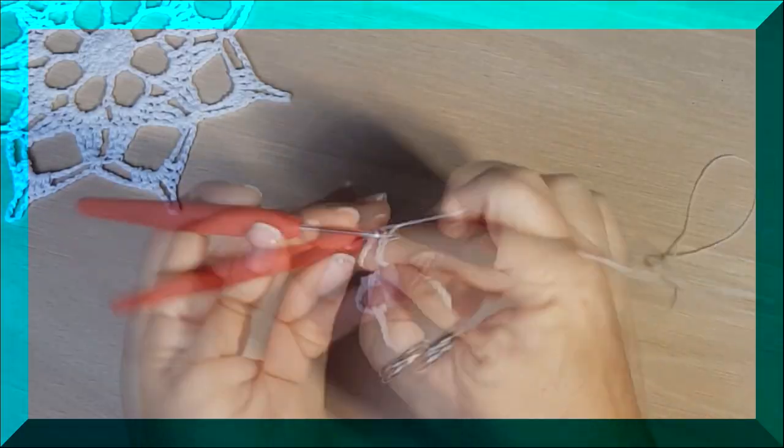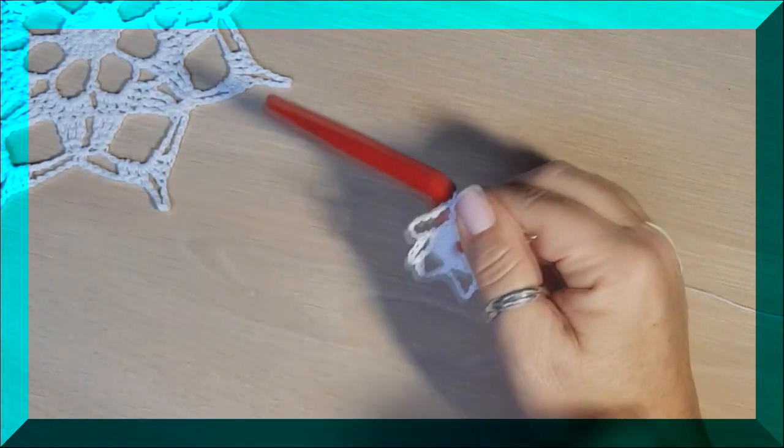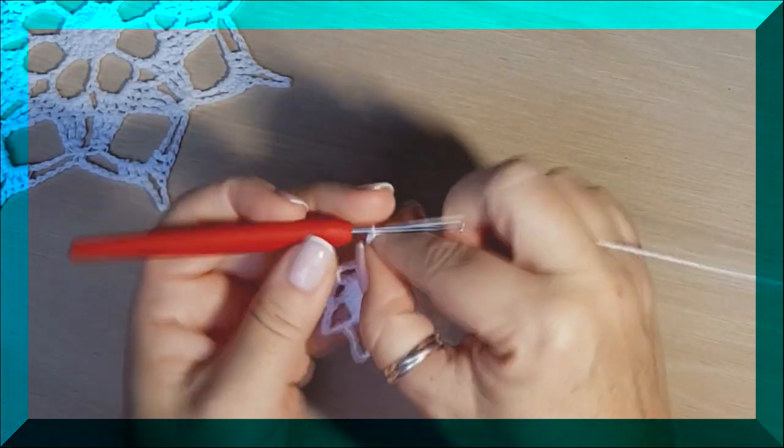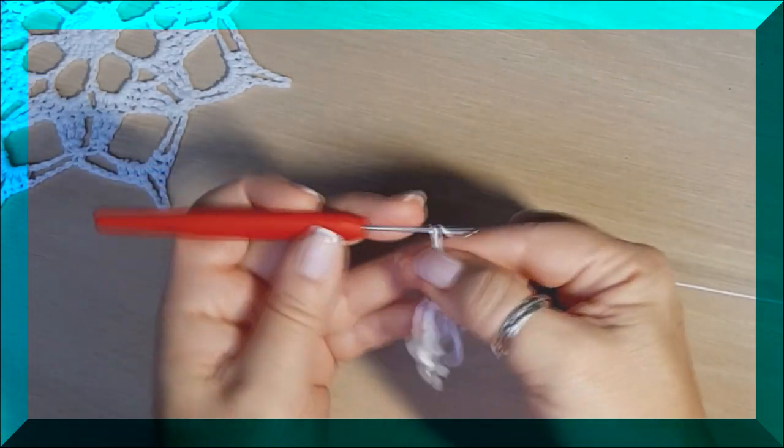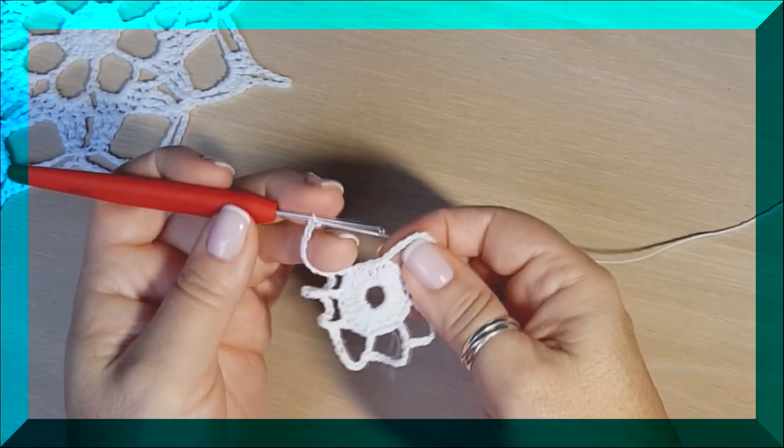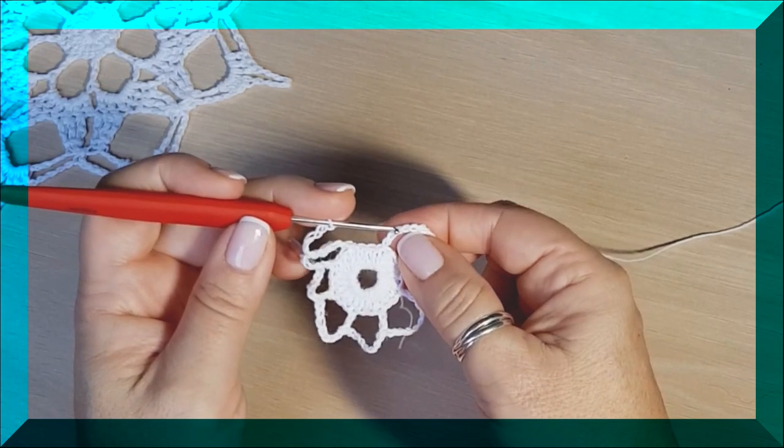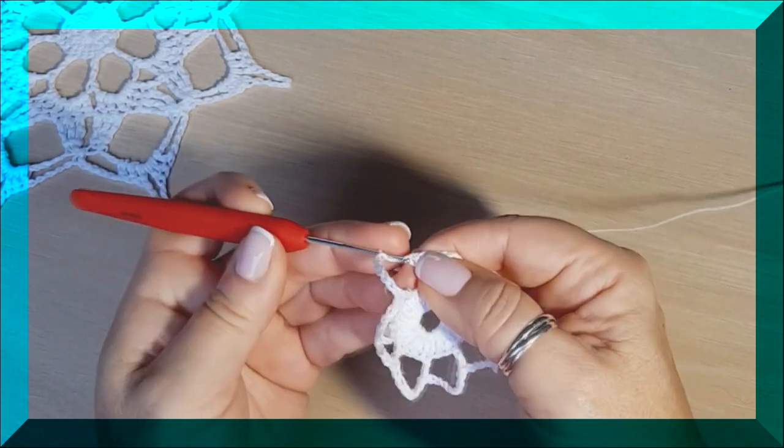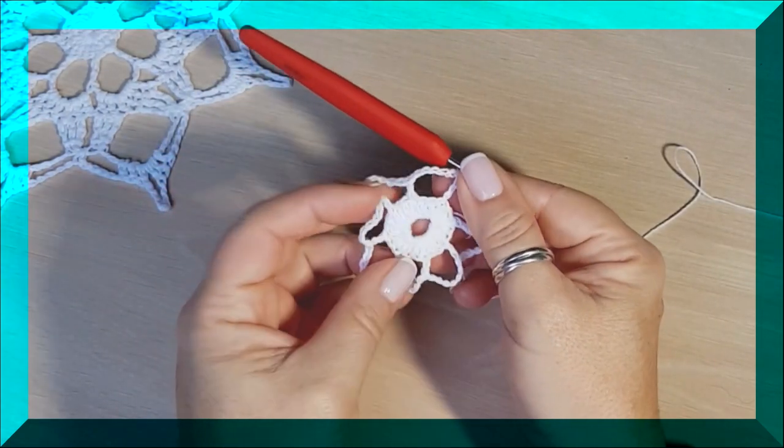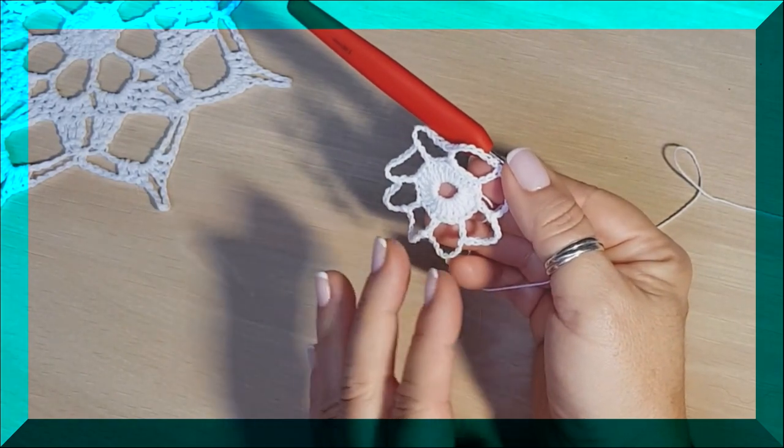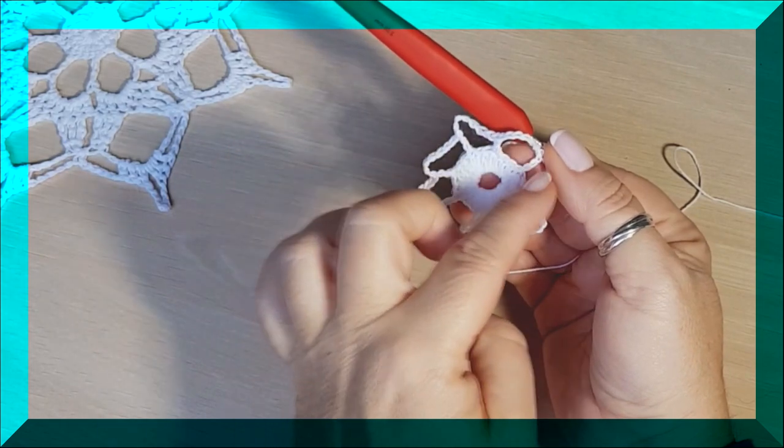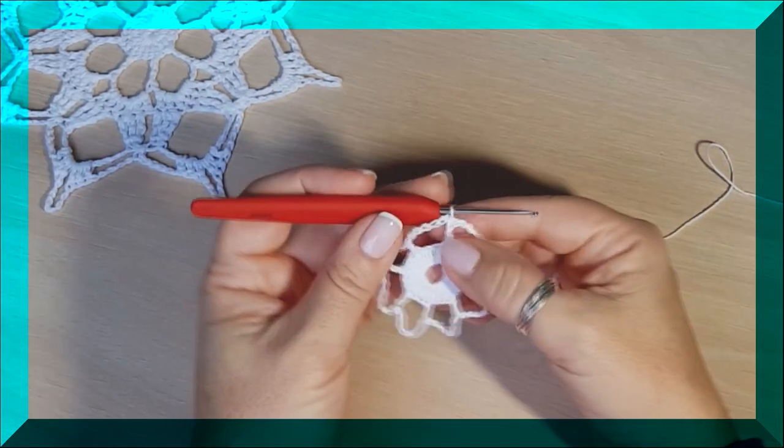Para terminar, una, dos, tres, cuatro, cinco, seis y siete cadenitas que se unen en un punto deslizado con la tercera de las cadenas porque es la que sustituye a un punto alto. Hasta ahí, todo bien también y fácil, ¿verdad? Porque no hemos hecho nada más que dividir en tres estos 24, con lo cual tendremos ocho huecos.